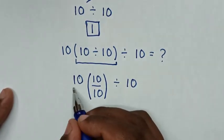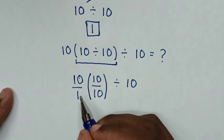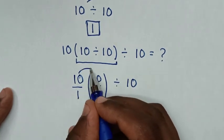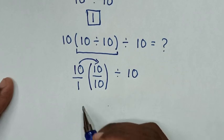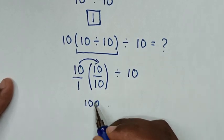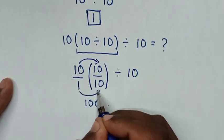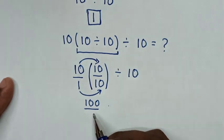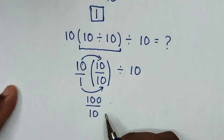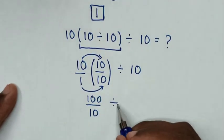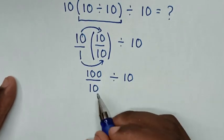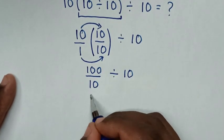So this 10 is the same as 10 over 1. Then we multiply the numerator. 10 times 10 is 100. So 100 divided by 10 is 10.